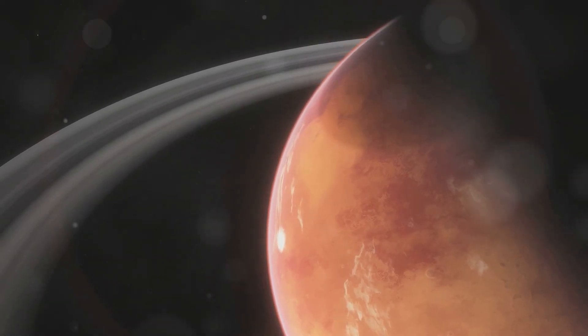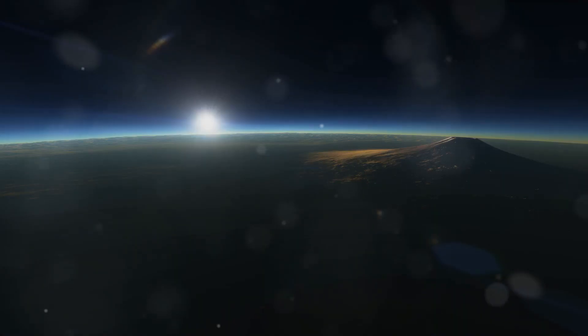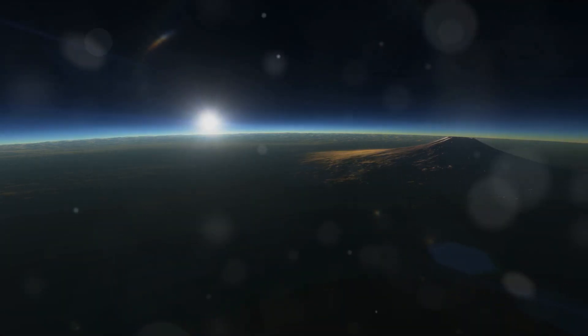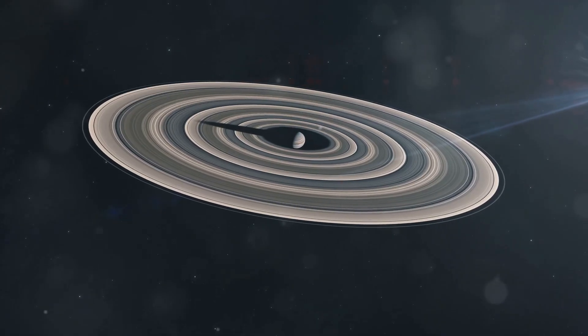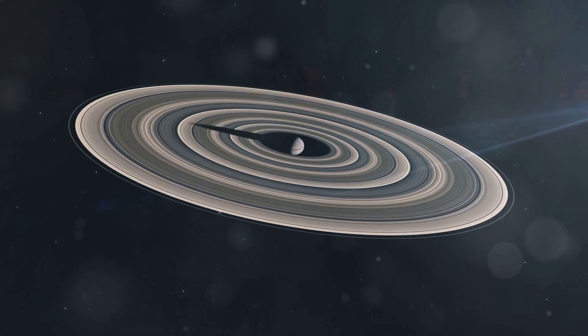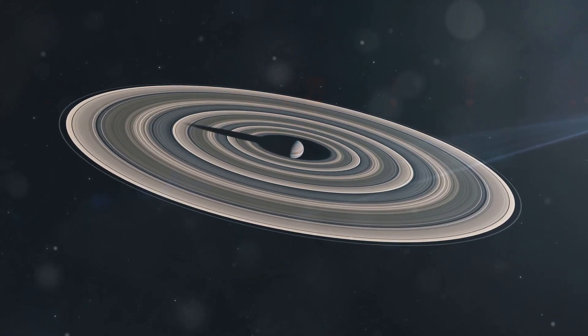Imagine the challenges of seasons on a planet with three suns. The variations in light and heat would be extreme. Understanding how this super-Earth maintains a stable orbit within this dynamic environment is a key question for astronomers.